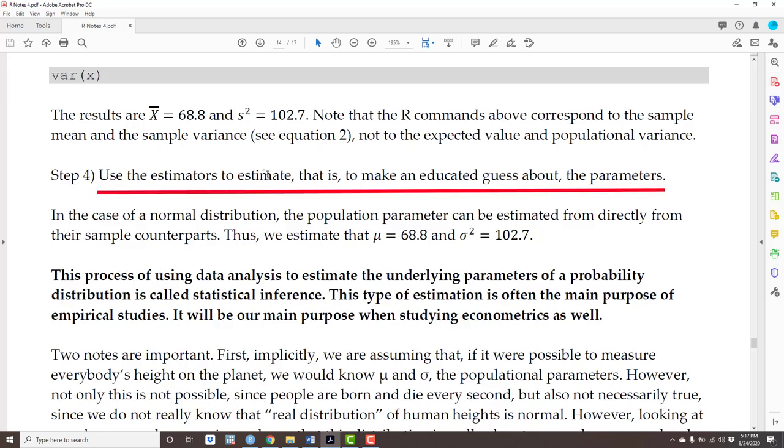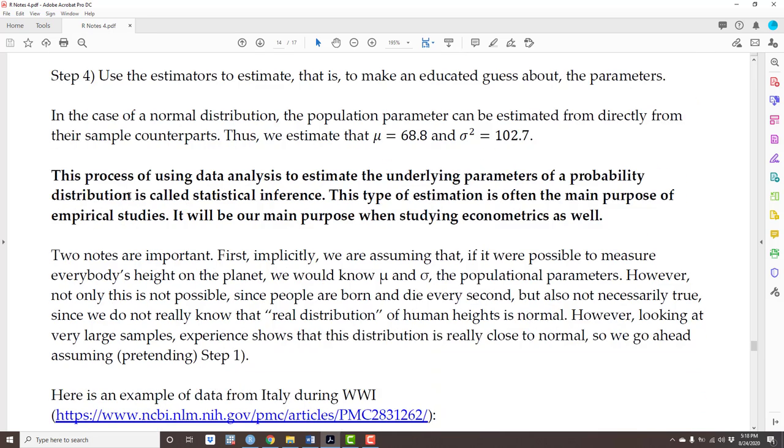And then finally, we use the estimators to estimate, that is, to make an educated guess about the parameters. In the case of a normal distribution, the population parameters can be estimated directly from their sample counterparts. That is, we're going to estimate that the parameter expected value is 68.8 and the parameter variance is 102.7. This process of using data analysis to estimate the underlying parameters of a probability distribution is called statistical inference. This type of estimation is often the main purpose of empirical studies. It would be our main purpose when studying econometrics as well.